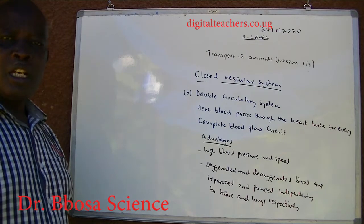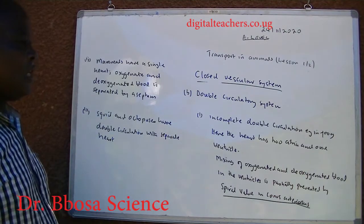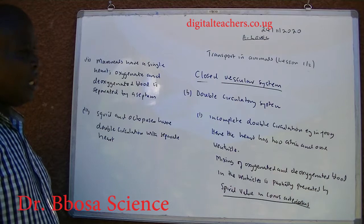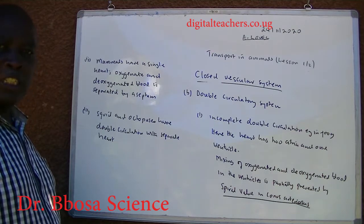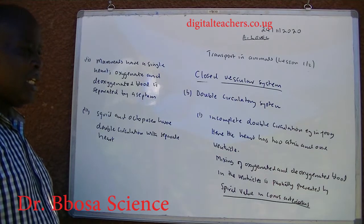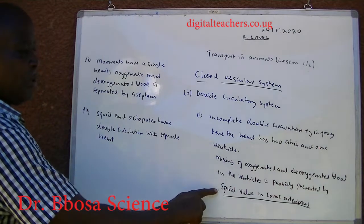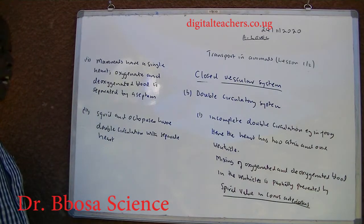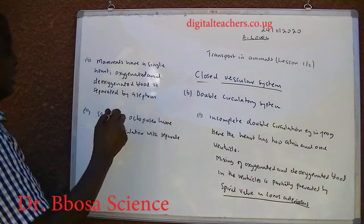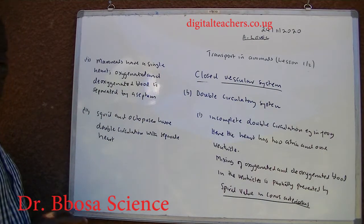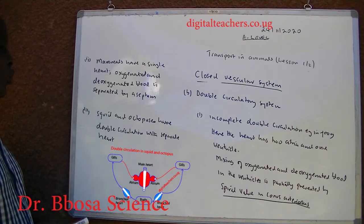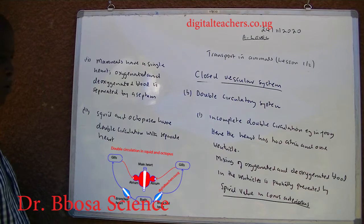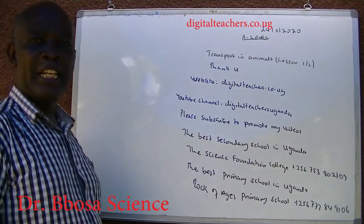Incomplete double circulation — frog: the heart has two atria and one ventricle. Mixing of oxygenated and deoxygenated blood in the ventricle is partially prevented by a spirovalve. Mammals have a single heart where oxygenated and deoxygenated blood is separated by a septum. Squid and octopus have double circulation with separate hearts.